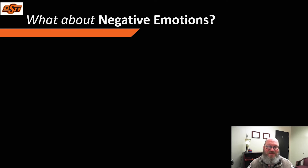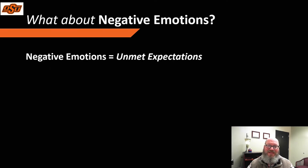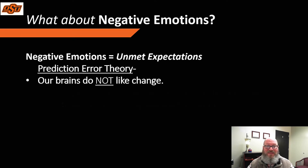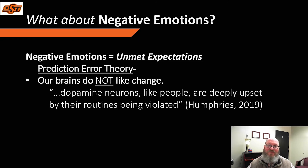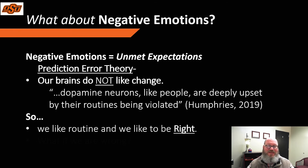So what about negative emotions? Often negative emotions stem from unmet expectations, or things not going as our minds predicted they would go. Our brains do not like change. Mark Humphreys, a neuroscience researcher with the Humphreys Lab, writes about prediction error theory, stating that dopamine neurons, like people, are deeply upset by their routines being violated. Humphreys further states that when your mind perceives a prediction error, dopamine neurons send a rapid signal that covers all three possible errors in predicting a reward: that the reward was better than expected — a positive error; that the reward was exactly as expected — no error; or that the reward was less than expected — a negative error.